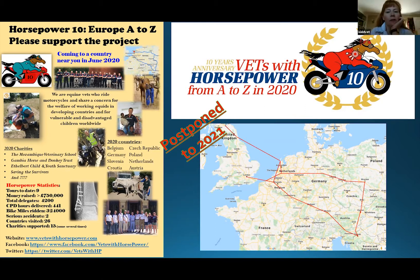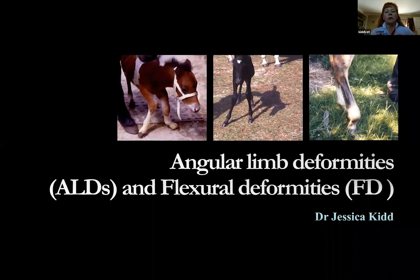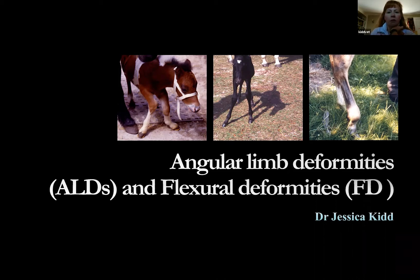Thank you, hello everyone. We're going to talk about bent legs in foals for the next little while. We're going to talk about angular limb deformities and flexural deformities, and I think it's actually good to explore these two topics back to back just because they have a number of similarities but they actually have quite a lot of points that are almost diametrically opposed, and I think it just helps you get your head around what you're actually trying to deal with.